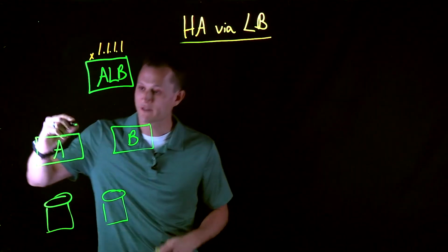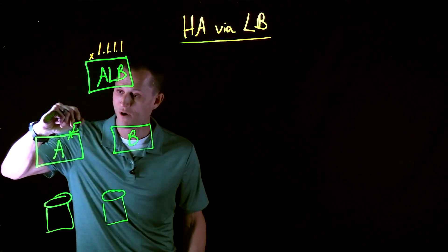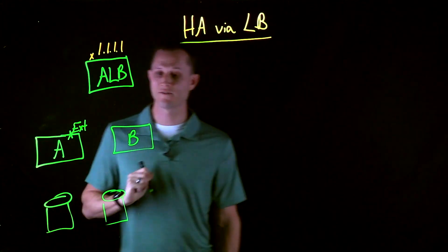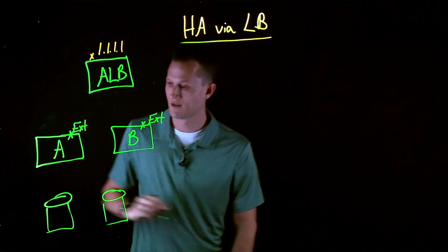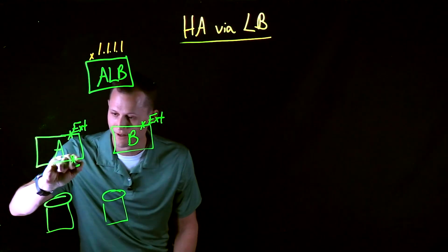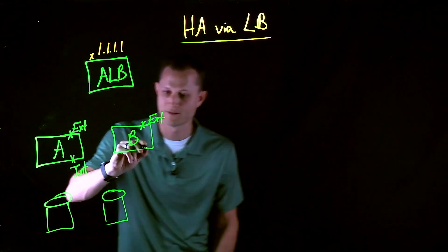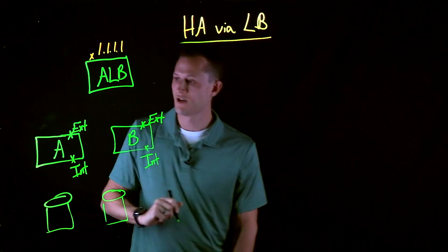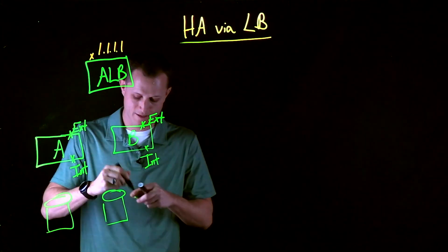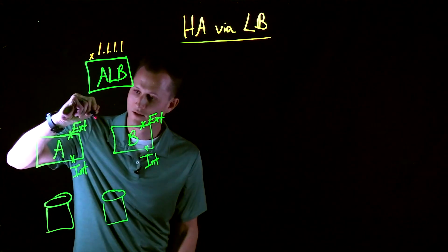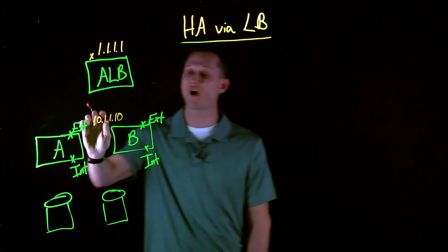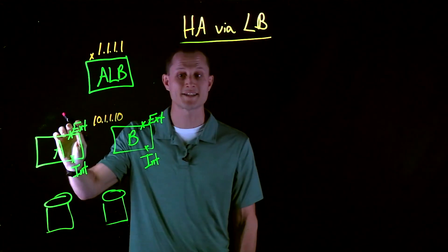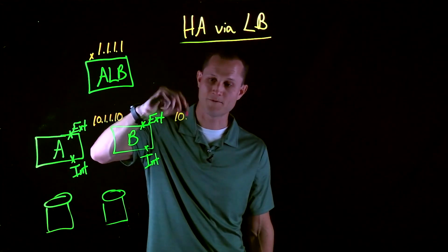So what we need to do is build out our F5. We have our primary external interface for each unit, and we also have an internal side as well. We'll give this an IP of 10.1.1.10. This is its primary IP address associated as a self-IP. We'll do the same for the second unit.